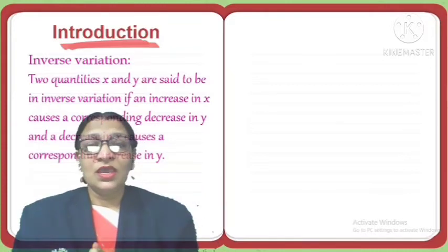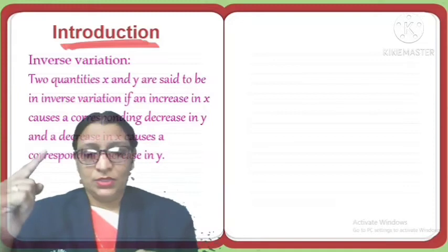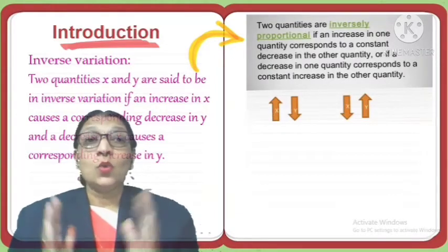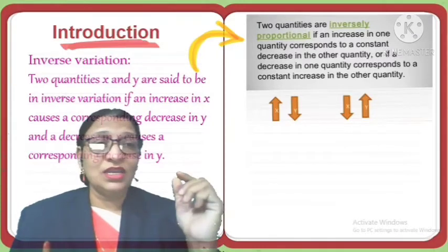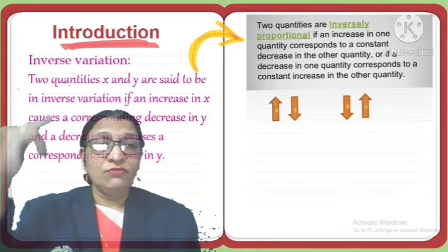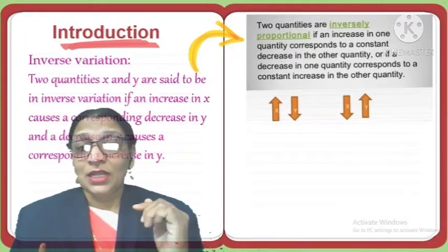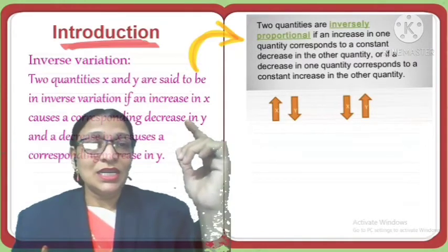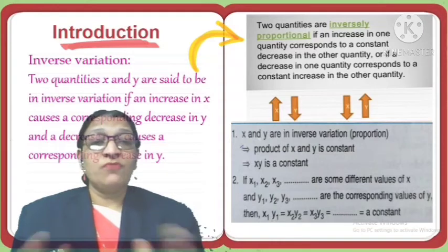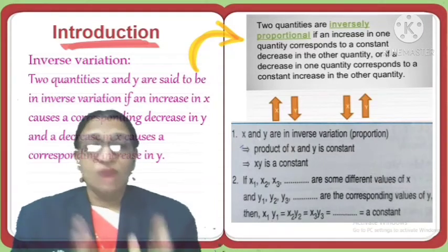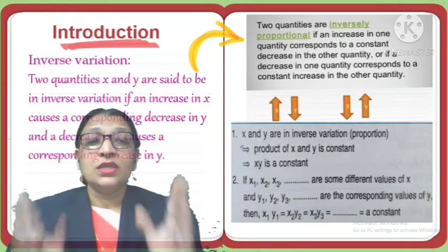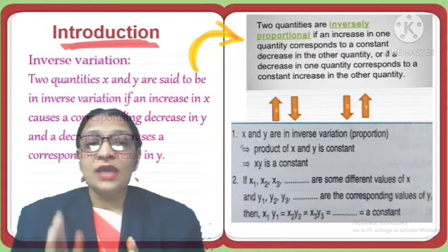So we can say two quantities x and y are in inverse variation if an increase in x causes a corresponding decrease in y, and a decrease in x causes a corresponding increase in y. In this type of variation, the product of x and y is constant — it means x·y = constant.